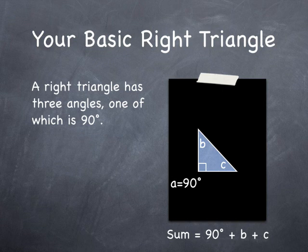This is a diagram of a right triangle. A right triangle has three angles, one of which is 90 degrees.